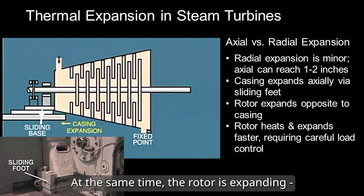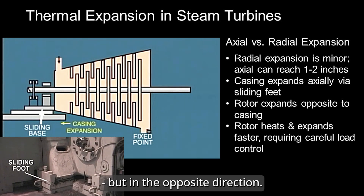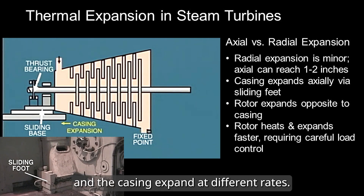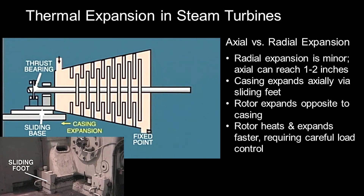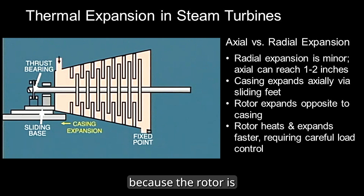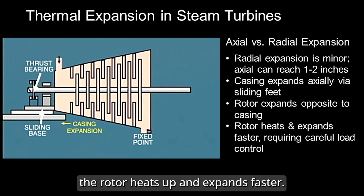At the same time, the rotor is expanding, but in the opposite direction. Since the thrust bearing holds the high pressure end, the rotor and the casing expand at different rates. Because the rotor is lighter than the casing, the rotor heats up and expands faster.